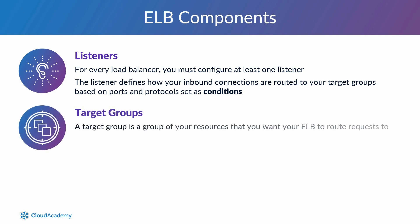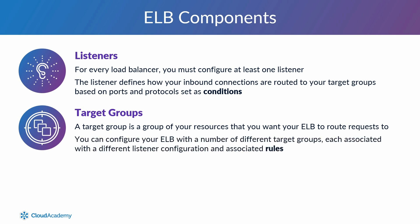Target Groups: a target group is simply a group of resources that you want your ELB to route requests to, for example a fleet of EC2 instances. You can configure your ELB with a number of different target groups, each associated with a different listener configuration and associated rules. This enables you to route traffic to different resources based upon the type of request.